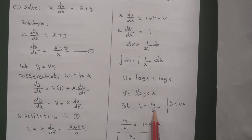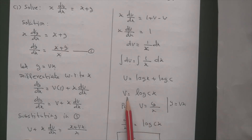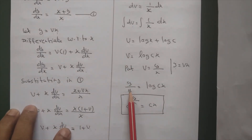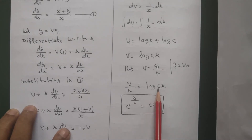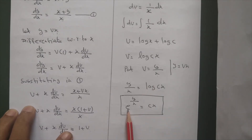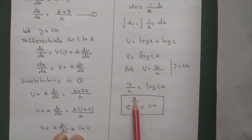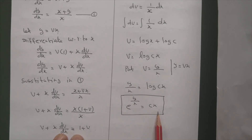Now recall that y equals vx, so v equals y/x. Substituting v equals y/x: y/x equals log(cx). To remove the log on the right side, raise e to both sides as the base. So e to the power (y/x) equals cx. This is the solution of the given differential equation.